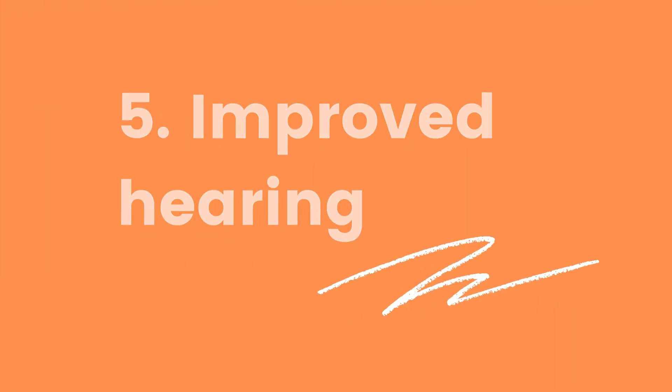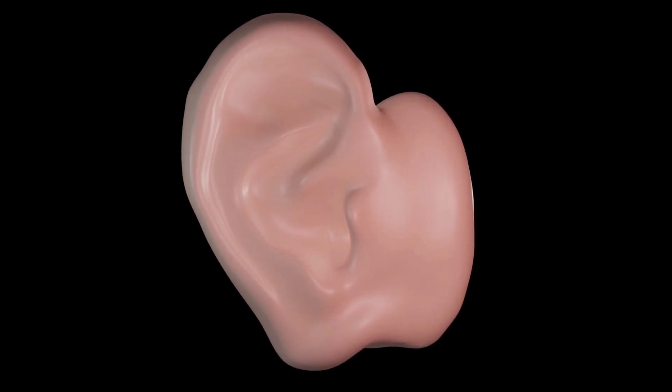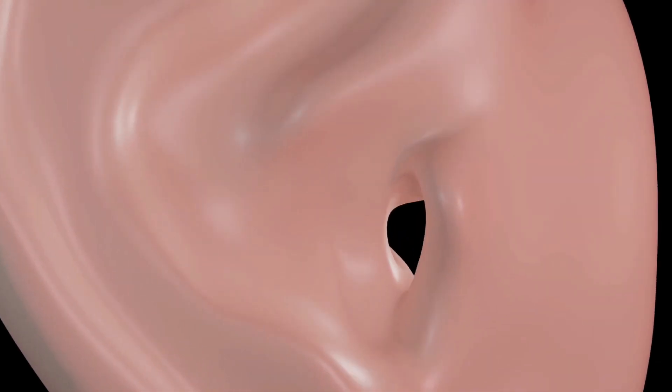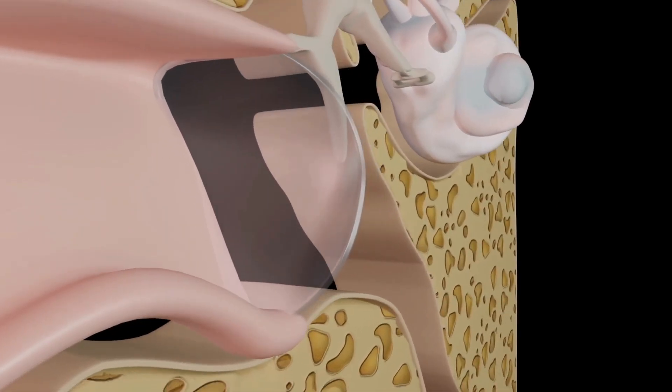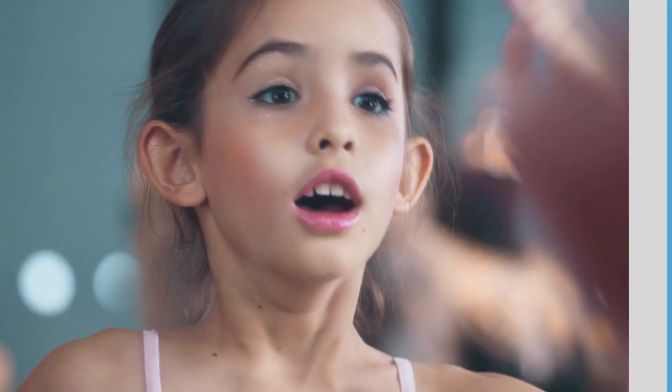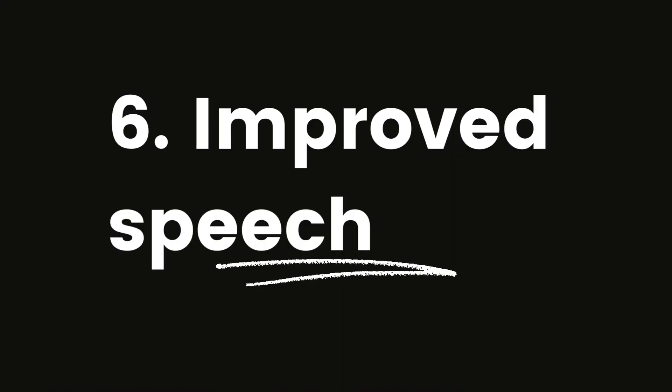Improved hearing: enlarged adenoids can press against the eustachian tubes that connect the ears to the back of the throat, leading to a buildup of fluid in the middle ear and reduced hearing. Removing the adenoids can improve hearing. Improved speech: enlarged adenoids can cause nasal speech, a speech disorder that occurs when adenoids obstruct airflow through the nasal passages. Removing the adenoids can improve speech quality.